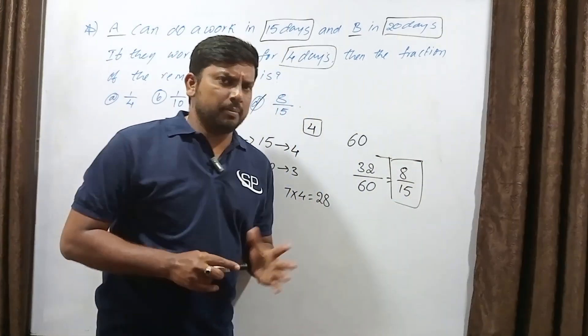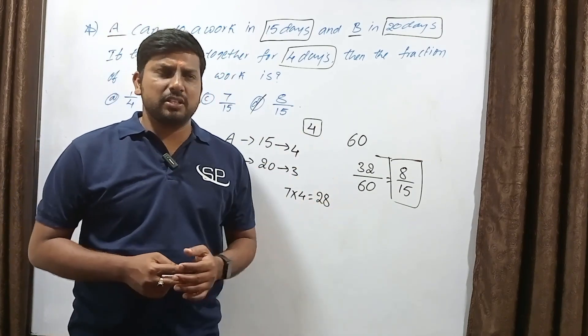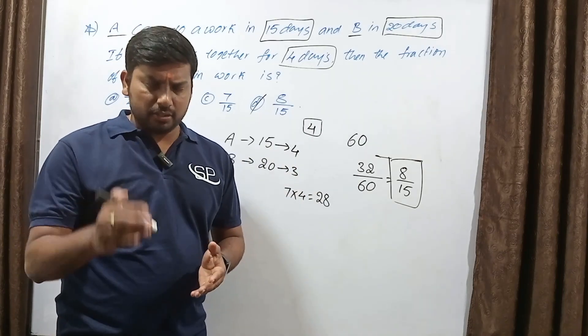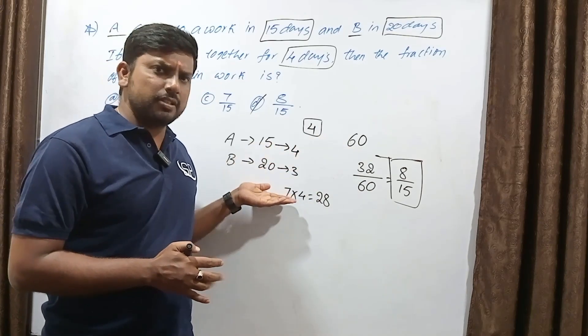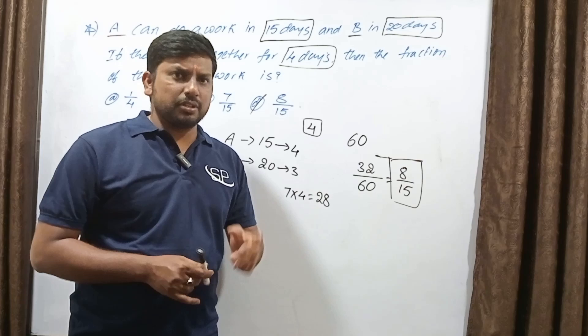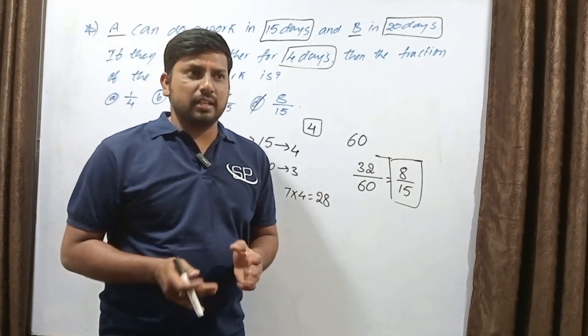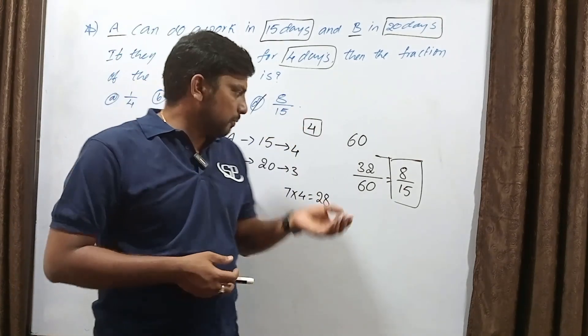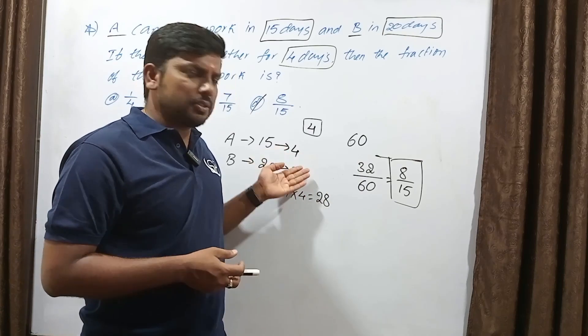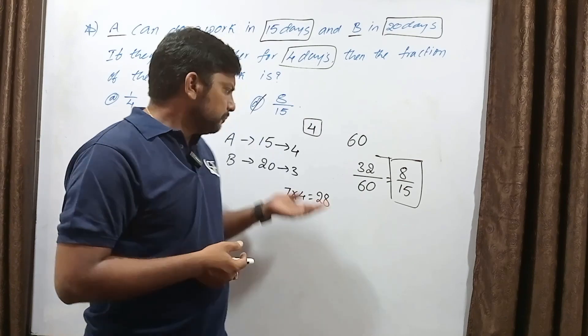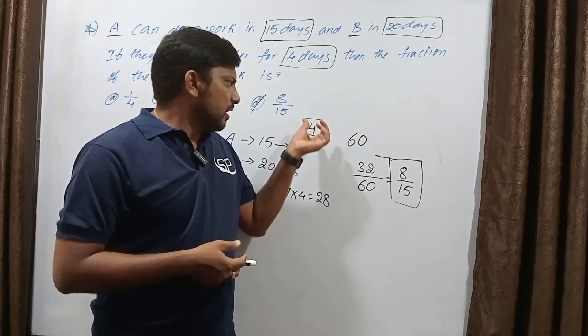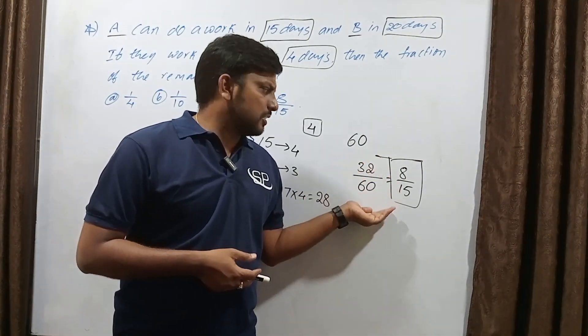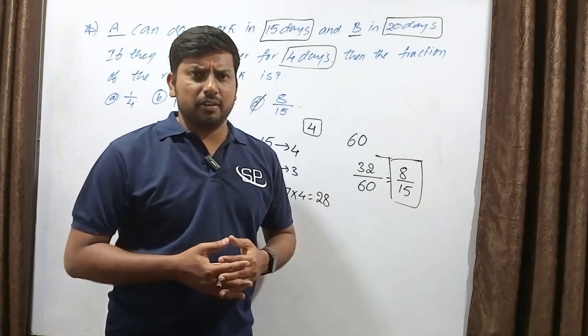The option is D. I have done the assumption method using LCM. The LCM of 15 and 20 is 60. We get 4 and 3, so 7 total. In 4 days work, 7 times 4 is 28 out of 60, leaving 32. 32 by 60 simplifies to 8 by 15. Thank you.